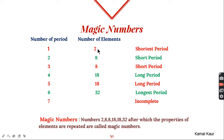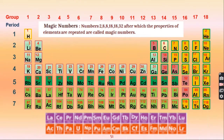The numbers representing the count of elements in each period — 2, 8, 8, 18, 18, 32 — are called magic numbers. These are called magic numbers because the properties of elements are repeated after these numbers.